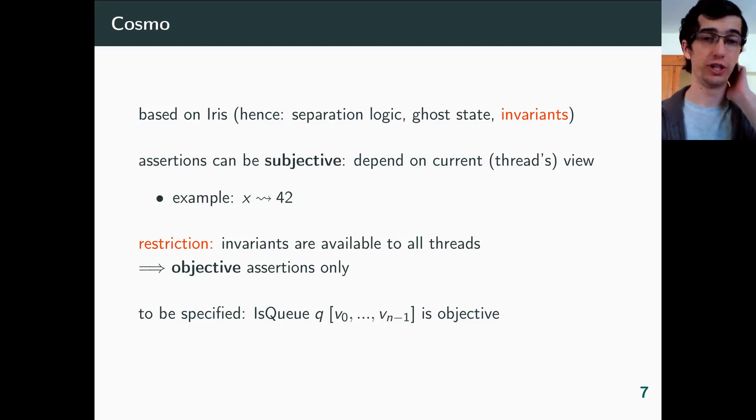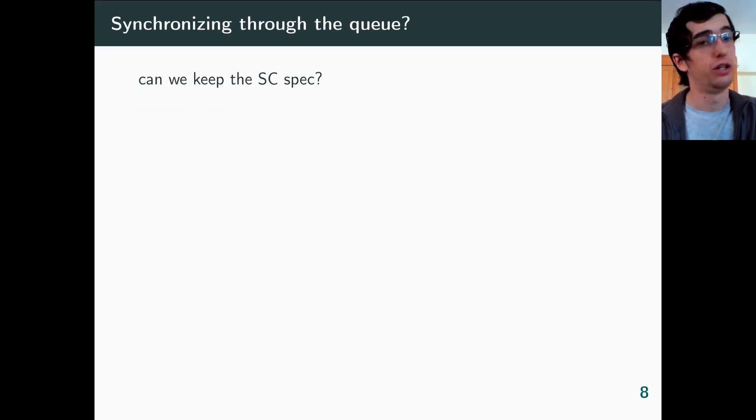With that said, a limitation with subjective assertions is that invariants are still available to all threads. So the assertions that they store cannot depend on the views of a specific thread. They are restricted to objective assertions. Back to our queue. Recall that we want to share the queue in an invariant, so its representation predicate must be objective. And we make this objectivity requirement a part of the specs. Now we don't need any other modification to the previous spec, it is still usable in limited cases, but for the general case, it lacks thread synchronization.